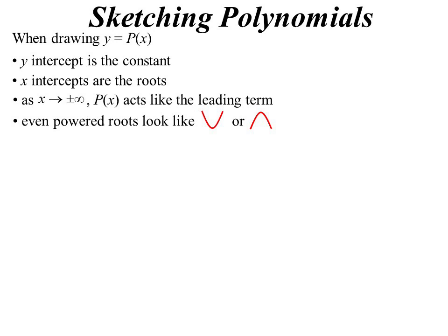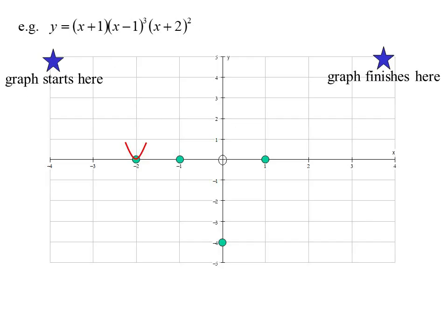Now remember, when they're factorized, they will behave like the power. So what do I mean by that? Even powered roots will look like U shapes, higher the power, flatter at the base, steeper at the sides. Here we have an even power at x plus 2, so over there at negative 2. We know it's going to have some sort of U shape there.